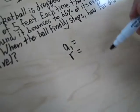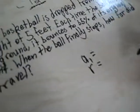To set up this problem, we have to figure out the values of A1 and R. A1 is the first term, and it said it started from a height of 5, so A1 is 5.